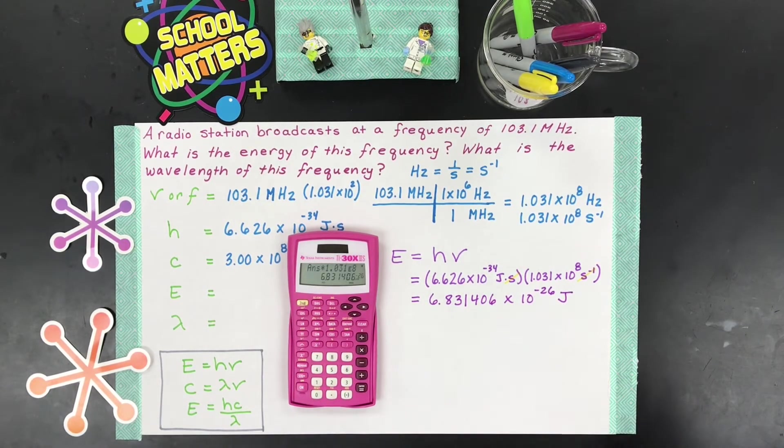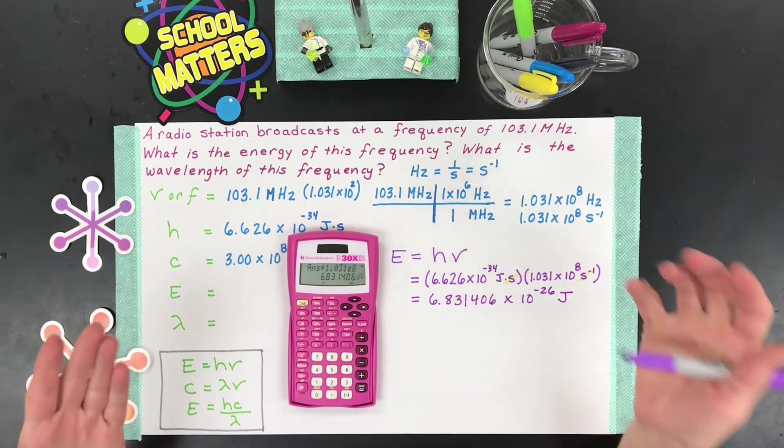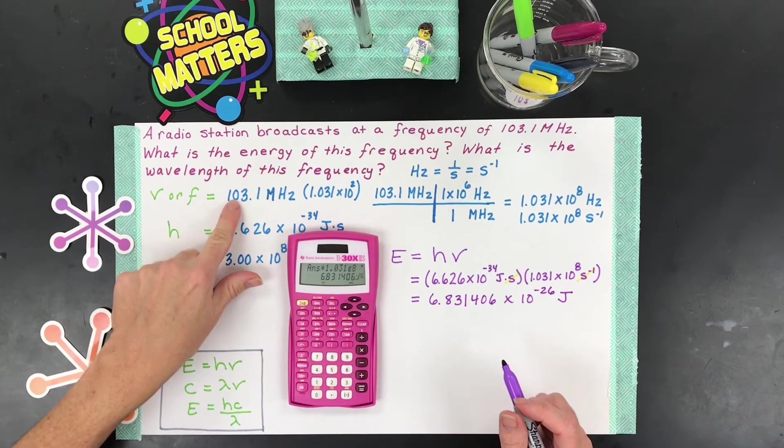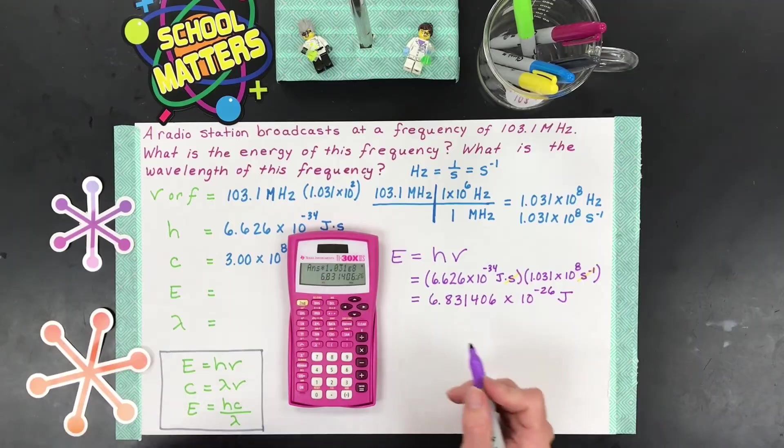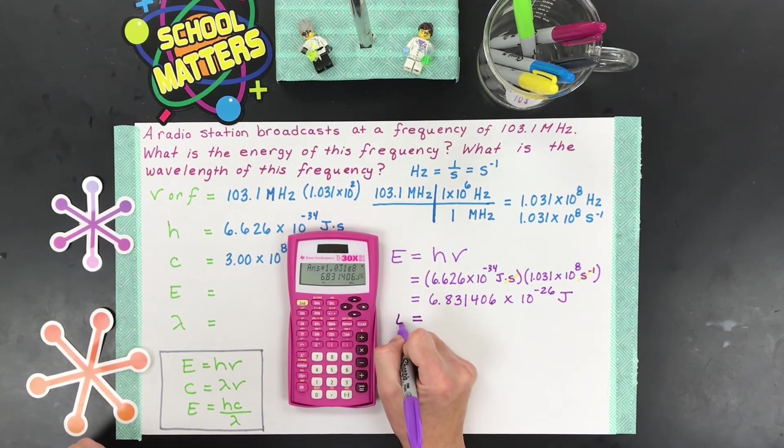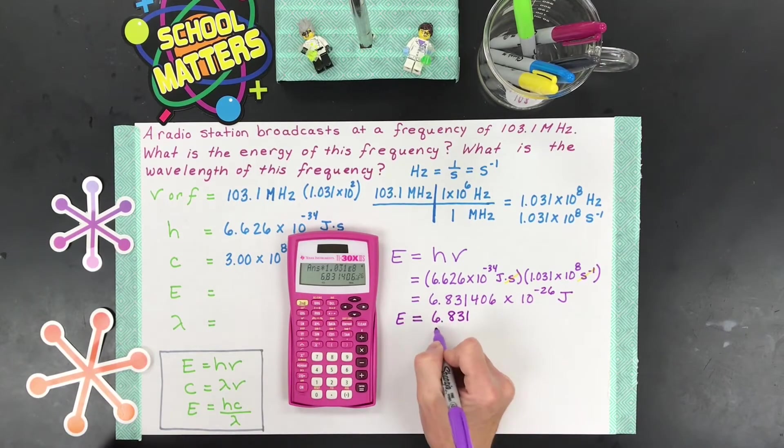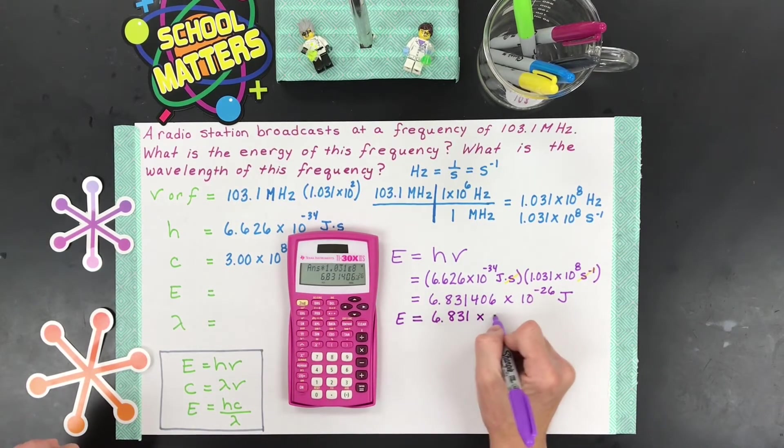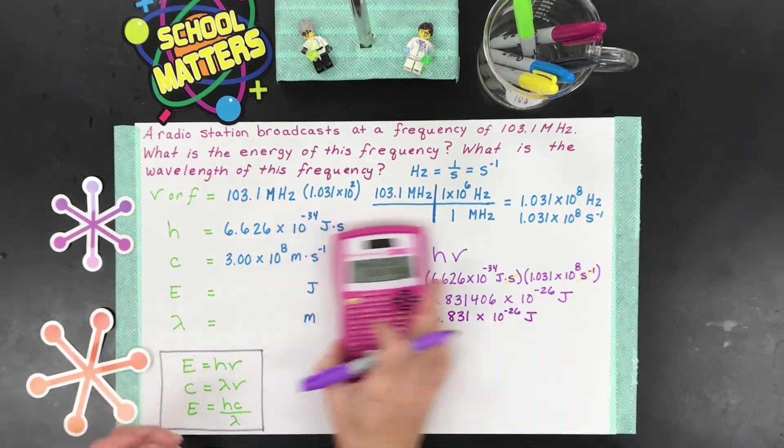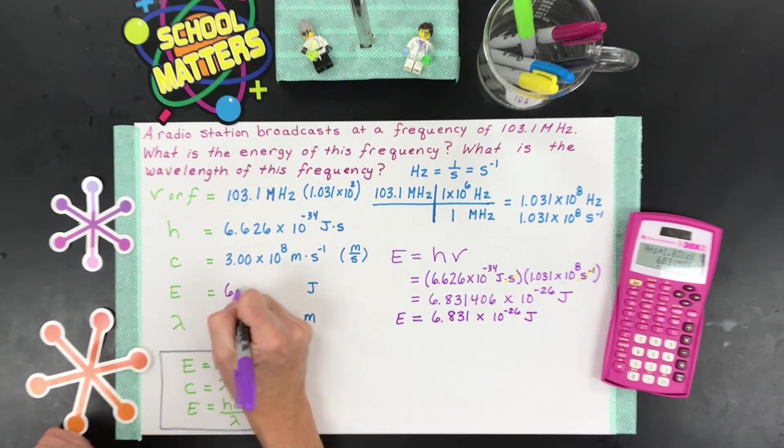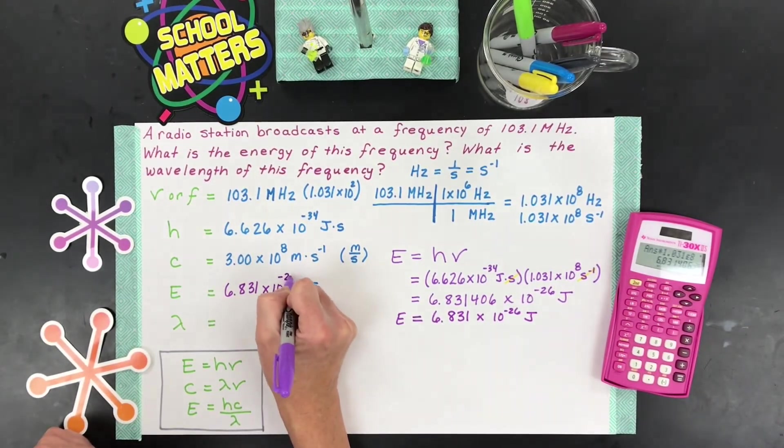Great. Now, time for significant figures. Our radio station's frequency was 103.1. So you've got a captive zero and you've got three non-zero digits. So that's four. So we can keep four significant figures in our answer. So I can keep 6.831 times 10 to the negative 26 joules. Excellent. I'm going to try to write that over here so that I can know I'm done with one of the two things I set out to do in this video.